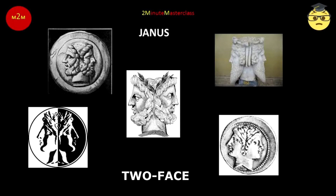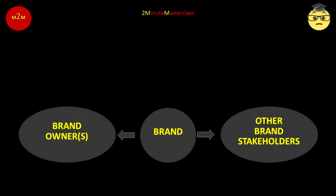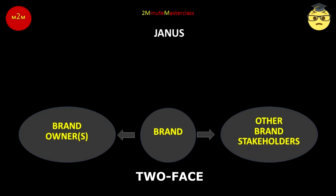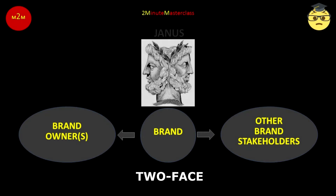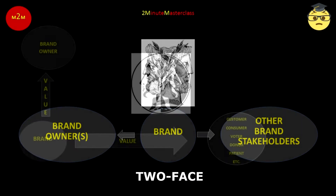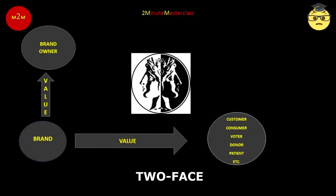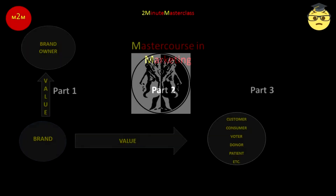As a brand delivers value under the tutelage of its marketers, it too faces in two directions. A brand delivers value to two different categories of stakeholder: its owner on one hand, and its users — consumers, customers, voters, donors — on the other. The face it presents to the one is very different to the face it presents to the other.